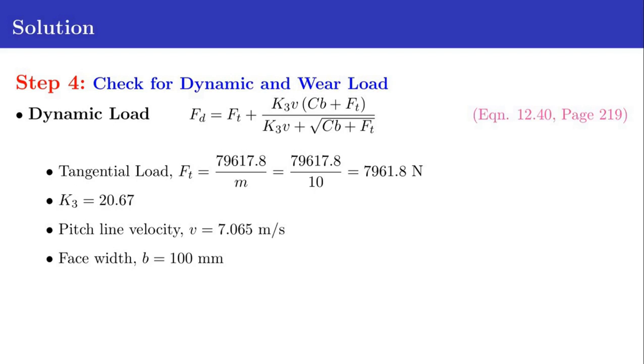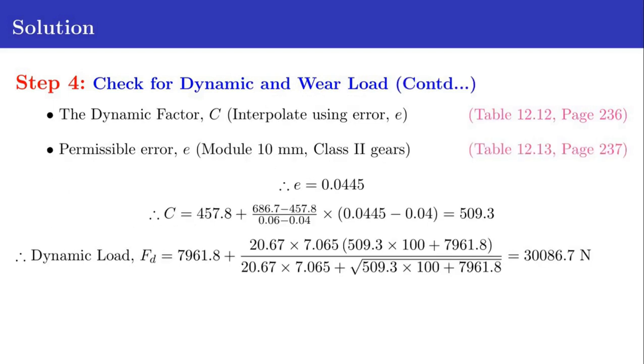The value of K is 20.67, given just below the equation itself. The pitch line velocity V is 7.065 meters per second. Face width b equals 100 millimeter. The dynamic factor C has to be found out by interpolating the error E. This value C can be found from table 12.12 in page 236.